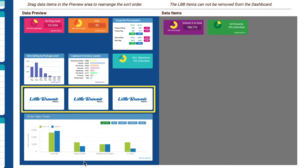You'll notice three boxes at the bottom of the Data Preview area labeled Little Brownie Bakers. Please note that these items cannot be edited by your council — they provide helpful tips and information to your council and troops throughout the cookie season.